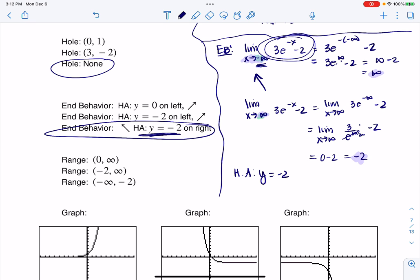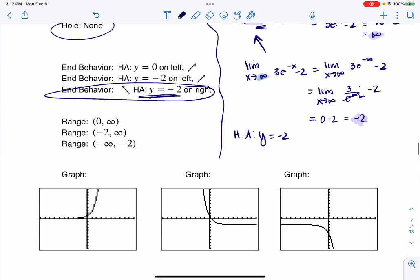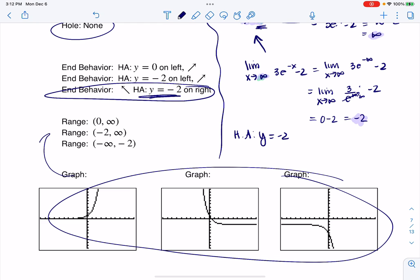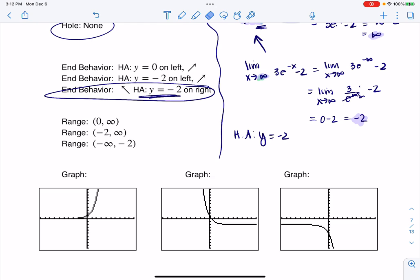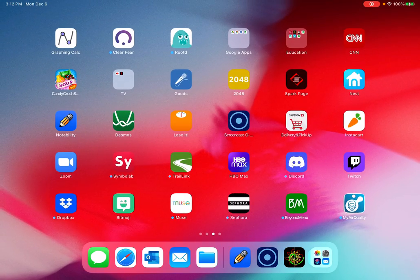From here, what I personally would do is I would go over to my calculator and see what this graph looked like. I would start with the graphs, and then I'd work myself backwards to get the range. I always get my range after I make my graph. So let me head over to my calculator.